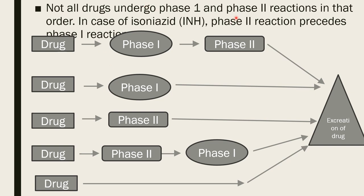Not all drugs undergo Phase 1 and Phase 2 reactions in order. In the case of isoniazid, it follows Phase 2 reaction preceding Phase 1. Drug A follows Phase 1 then Phase 2 and excretes in urine. Drugs B and C follow both Phase 1 and Phase 2 then excrete in urine. Drug D follows Phase 2 first, then Phase 1, and excretes in urine. Drug E is excreted unchanged in urine — it is not metabolized in the body. So the sequence may be different for each drug.